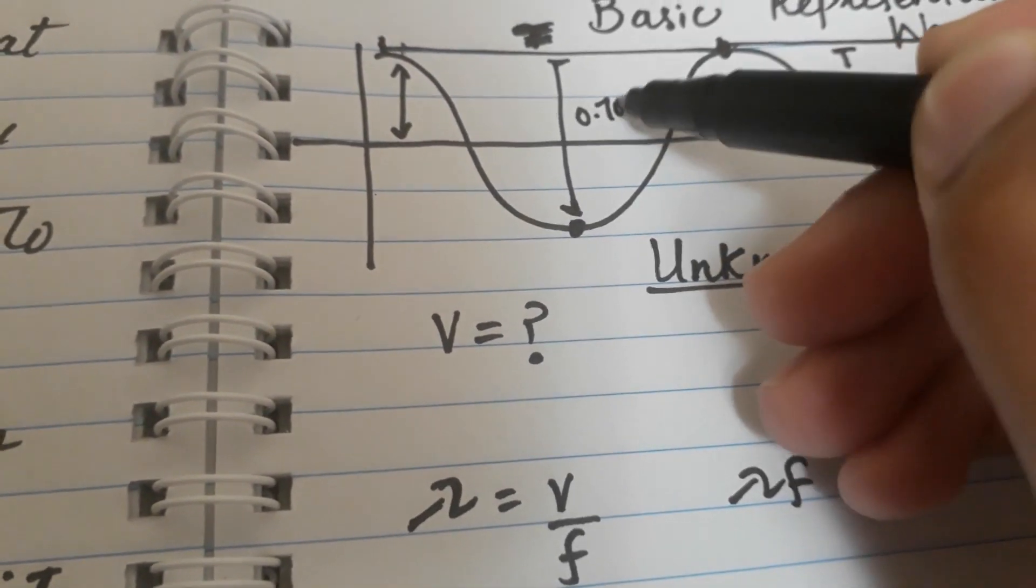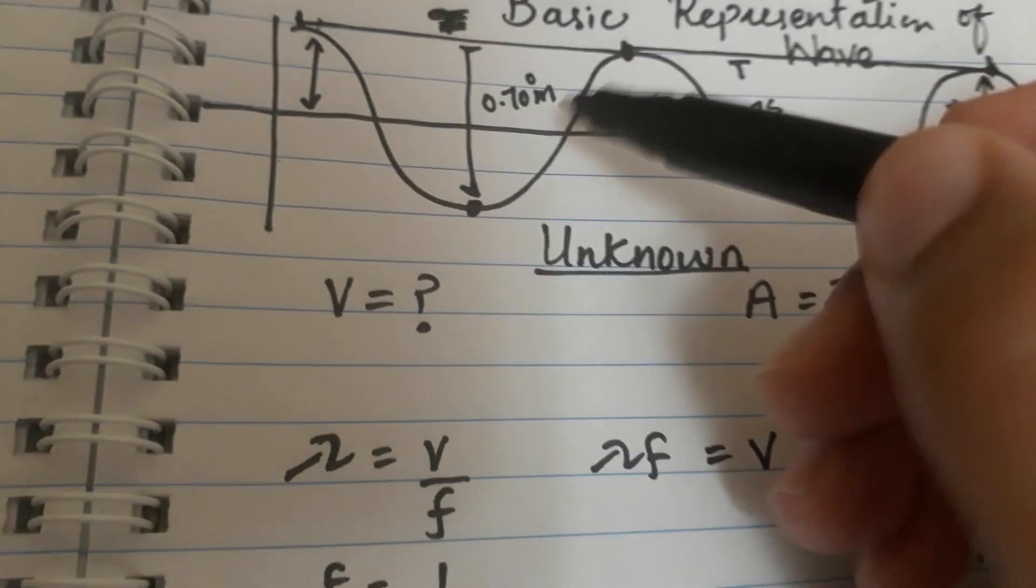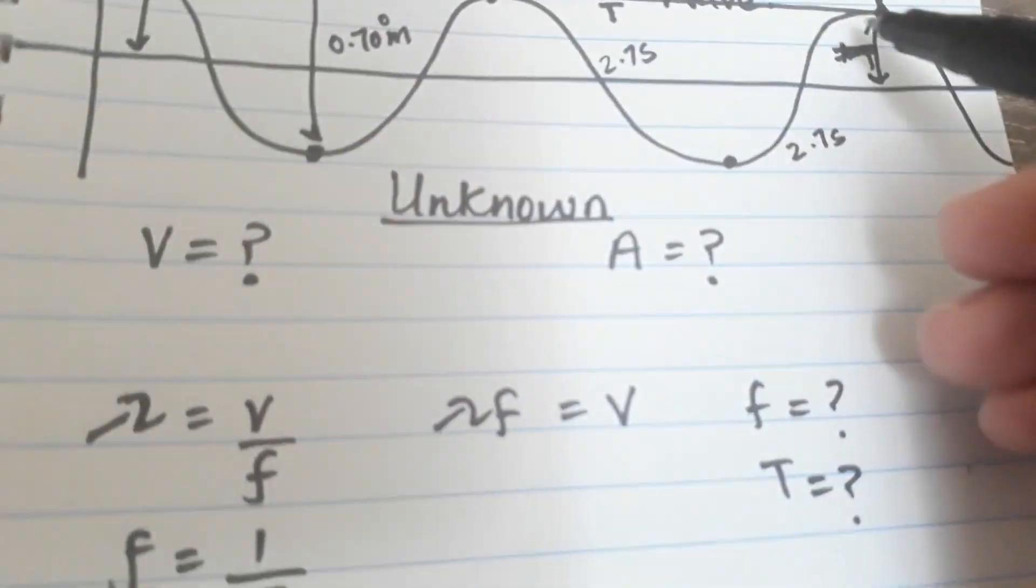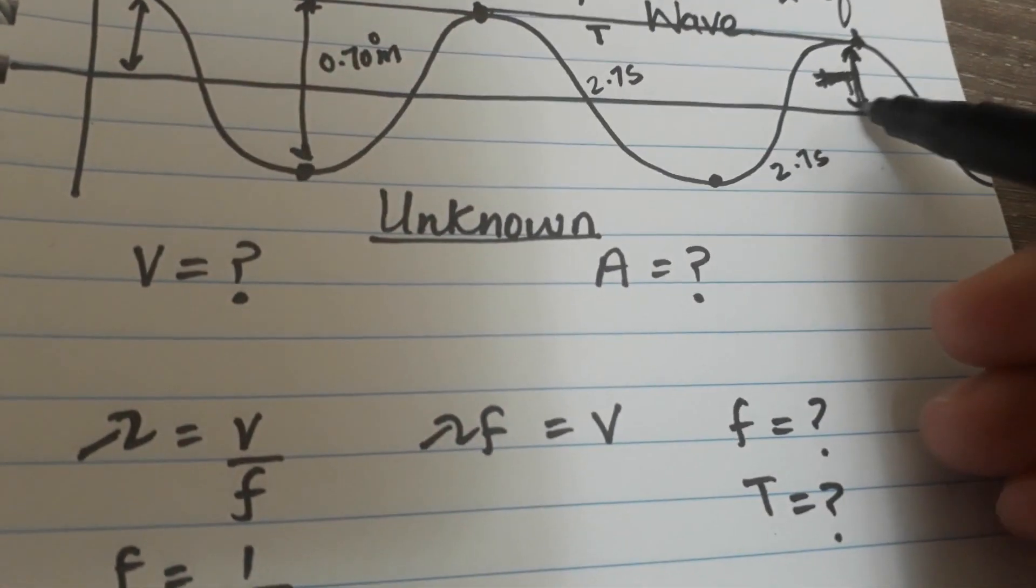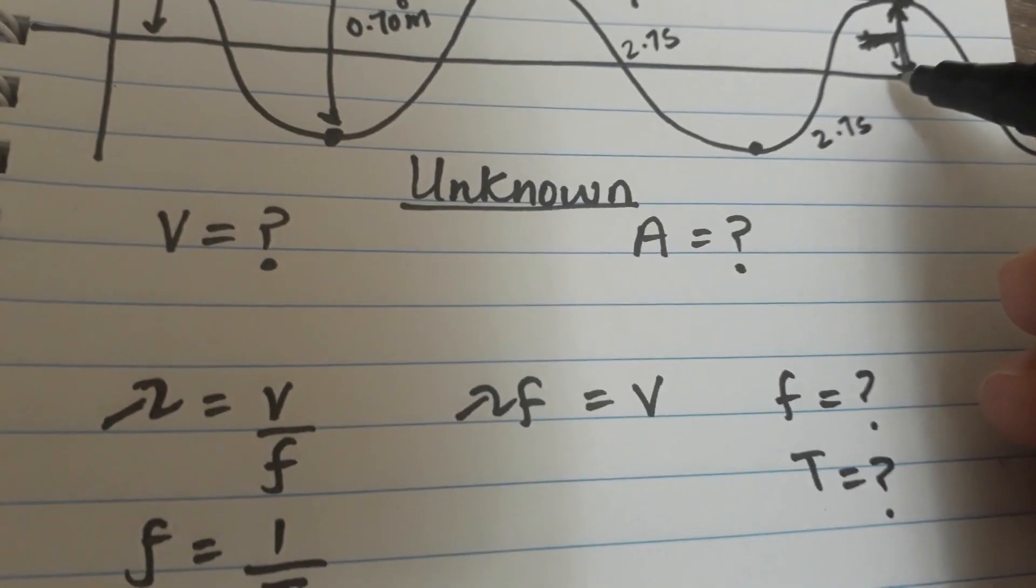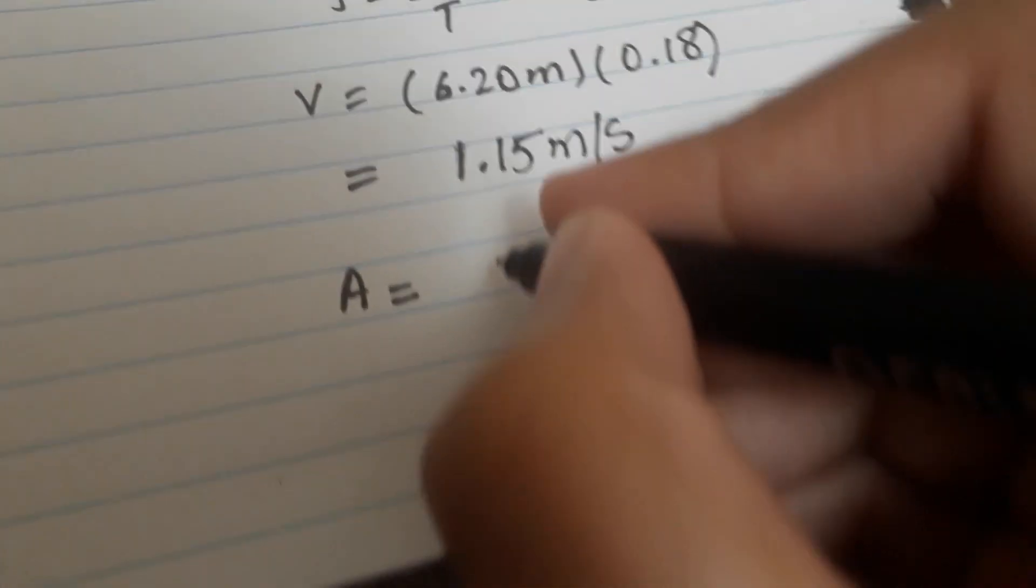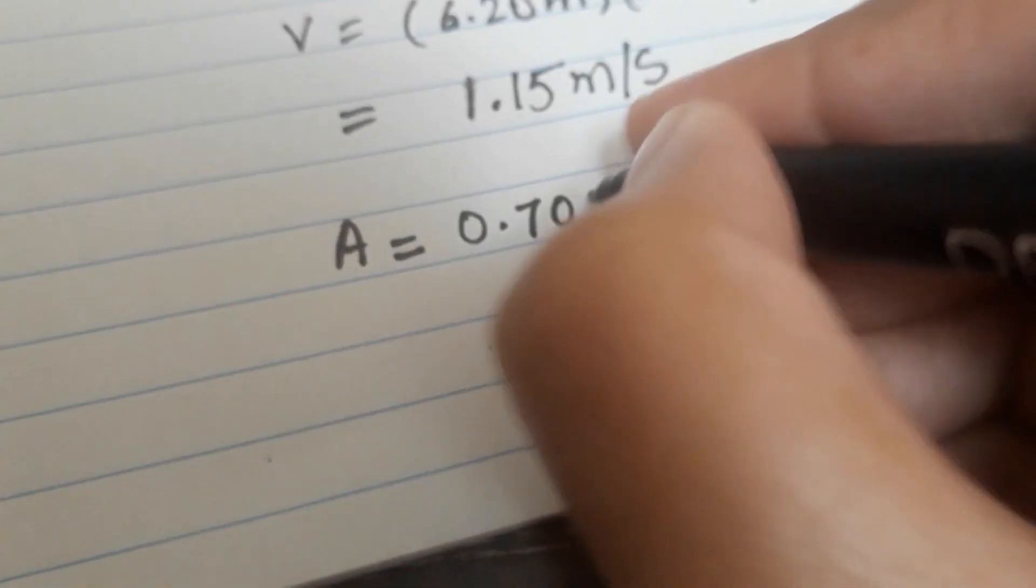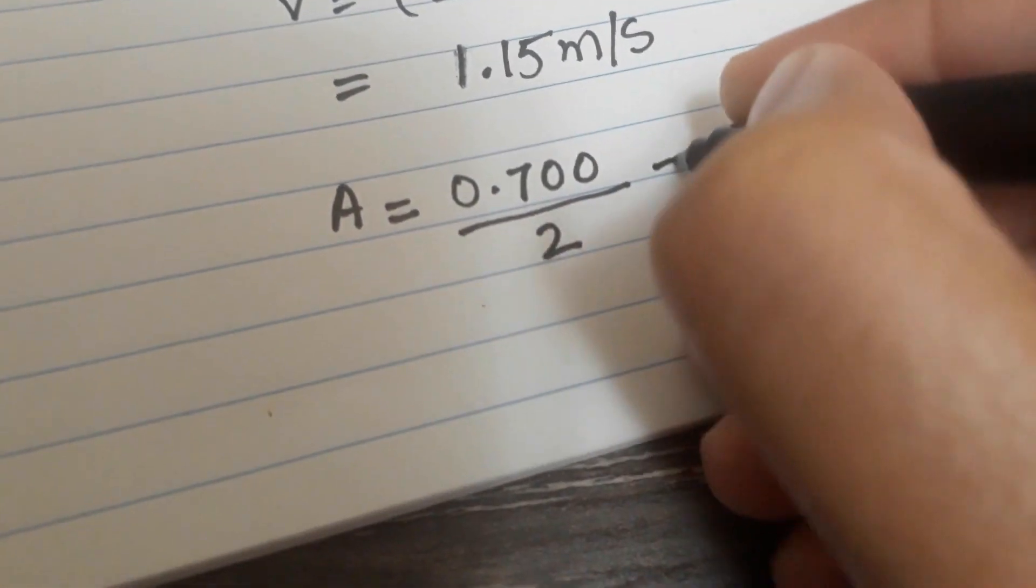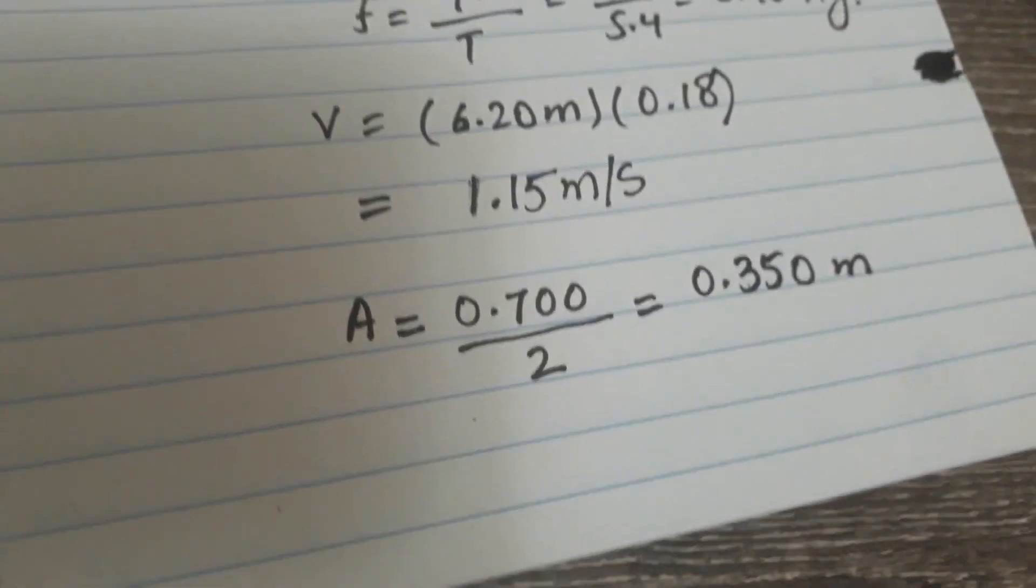Looking at this diagram, this is my highest point and this is my lowest point. I'm traveling a total distance of 0.7 meters. I know that the amplitude is always going to be from here to here, from my crest to my equilibrium position. So my amplitude is 0.700 divided by 2, which gives me 0.350 meters. And this is how you solve this problem.